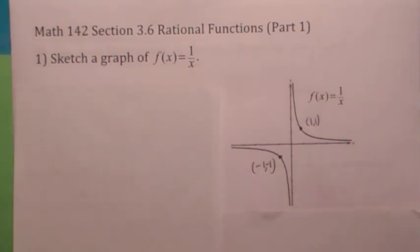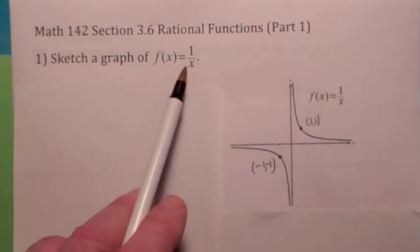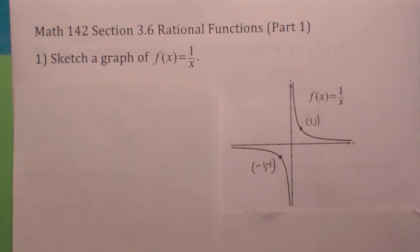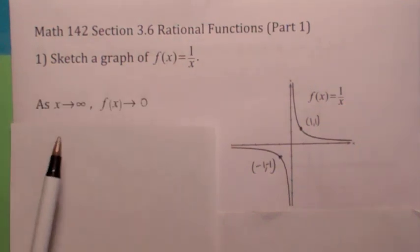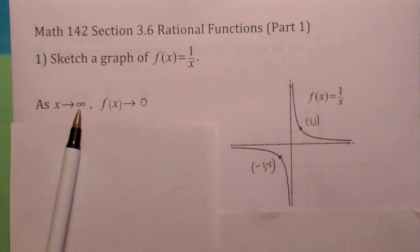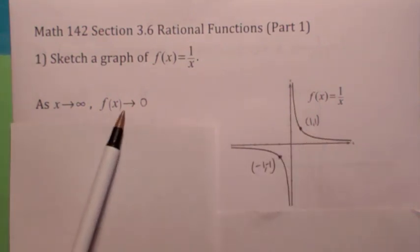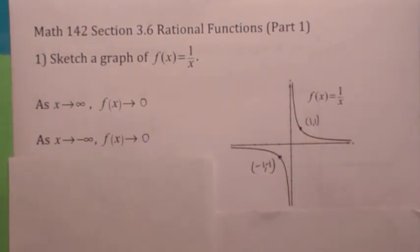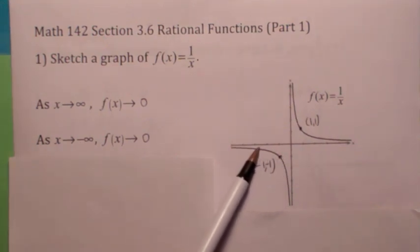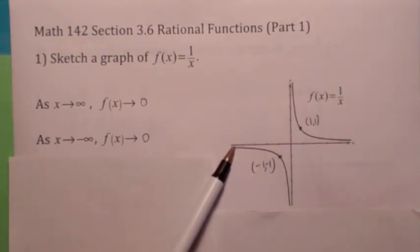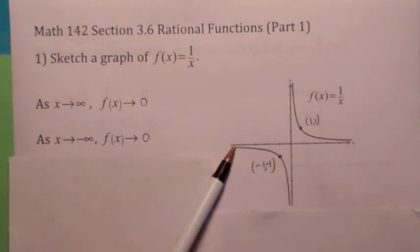You notice right off the bat there's a problem with the domain. This function is not defined when x equals 0. As x goes to infinity — think of x getting very big positive — the y values are getting close to 0. As x goes to negative infinity, that means x goes to the left, very negative numbers, and the y values are also getting close to 0, but they're negative.